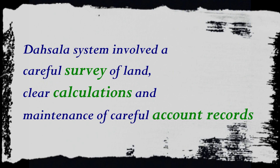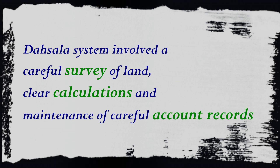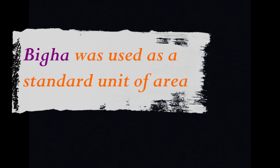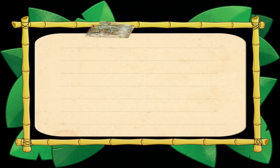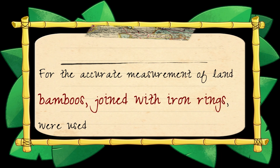Thus, the Dehsala system involved careful survey of land, clear calculations, and maintenance of careful account records. For the clear measurement of land, bigha was used as a standard unit of area. For correct measurement, old measures made of rope were replaced by new measures made of bamboos joined with iron rings.